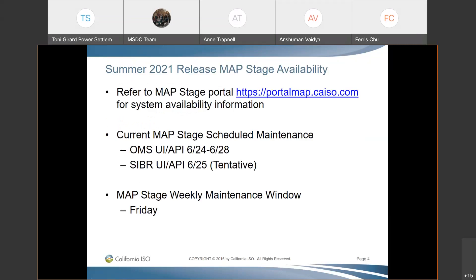For MAP stage availability, we still have the same MAP stage schedule maintenance that was shared in the last meeting. We have an OMS UIN API outage from June 24th to 28th, and for Cyber UIN API, June 25th is still tentative — we haven't confirmed it yet. Any questions regarding the availability of MAP stage?